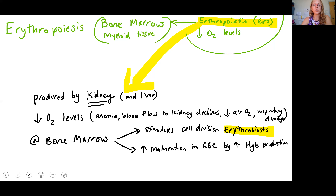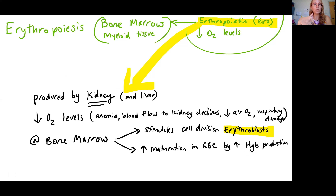What does EPO actually do? It goes to the bone marrow and triggers cell division in cells called erythroblasts. EPO also helps increase the maturation of red blood cells by increasing hemoglobin production. So: oxygen levels low → kidney releases EPO → EPO goes to bone marrow → increases erythroblast production → speeds up hemoglobin (HGB or Hb) production.